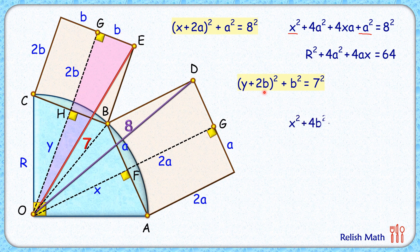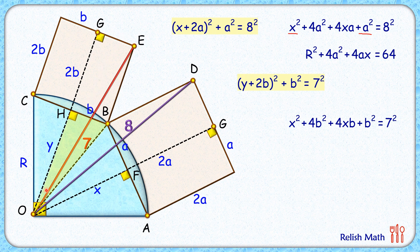Opening the bracket gives an equation of the same form. Forming triangle OHB, where HB = b, we get y² + b² = OB² = r². Replacing y² + b² with r² gives us the second equation.